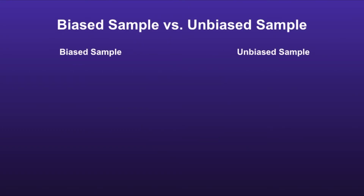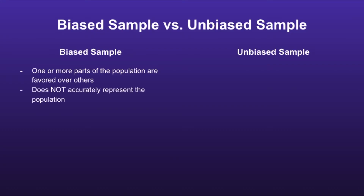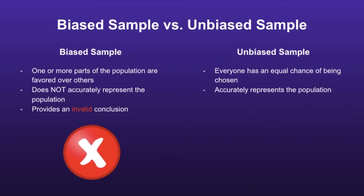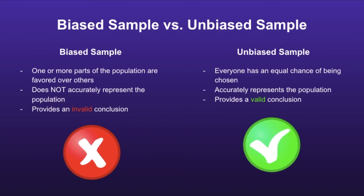Biased sample vs. unbiased sample. In a biased sample, one or more parts of the population are favored over others. It does not accurately represent the population, and it will provide an invalid conclusion. So biased samples are not good. In an unbiased sample, everyone has an equal chance of being chosen. It accurately represents the population and will provide a valid conclusion. So unbiased samples are good.